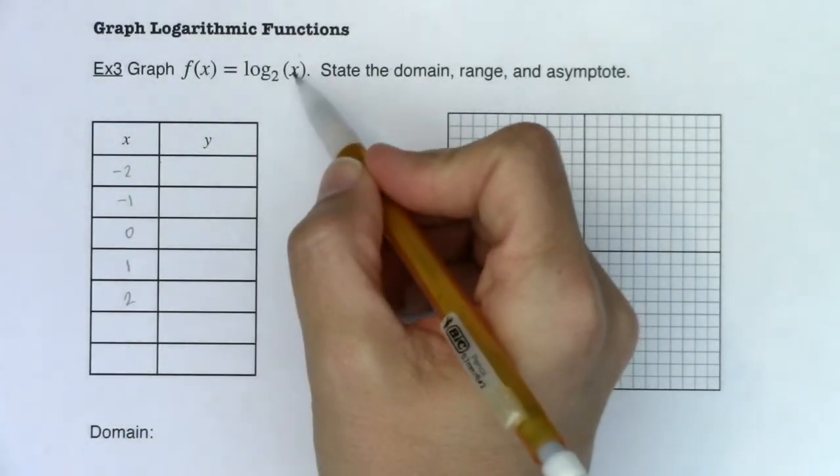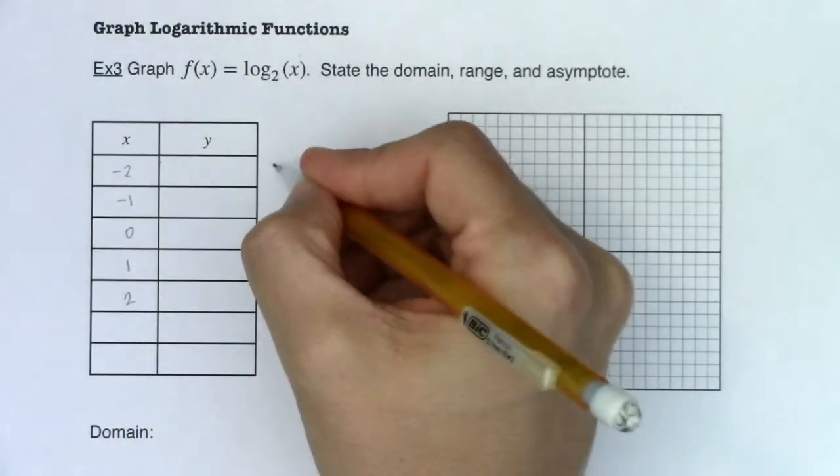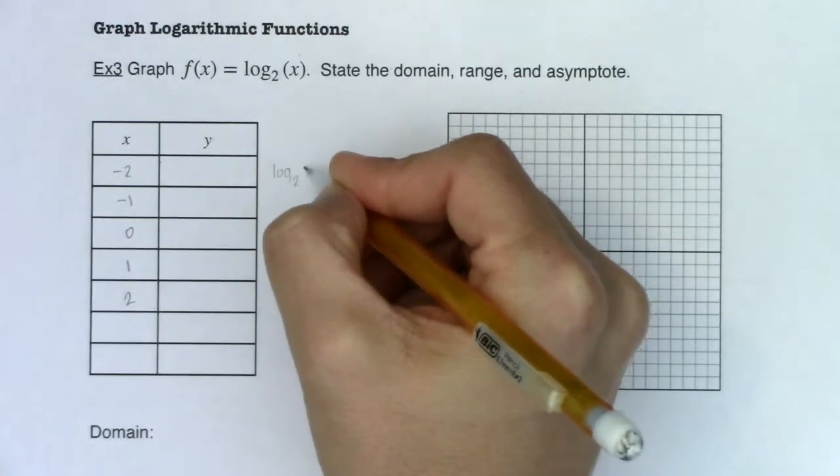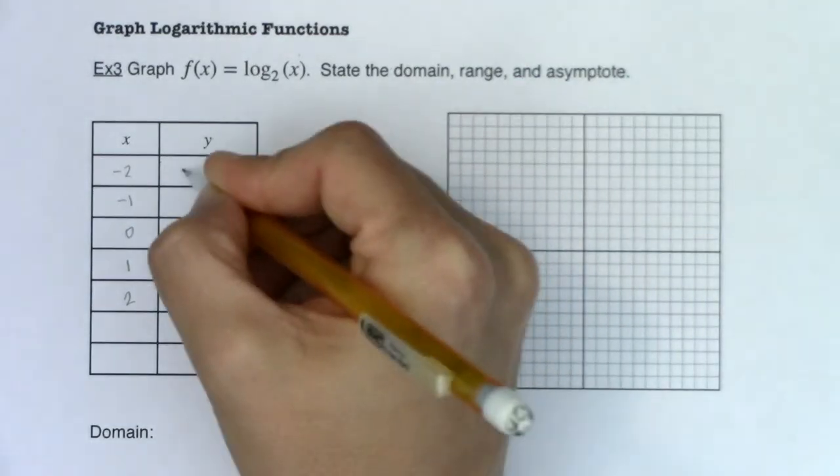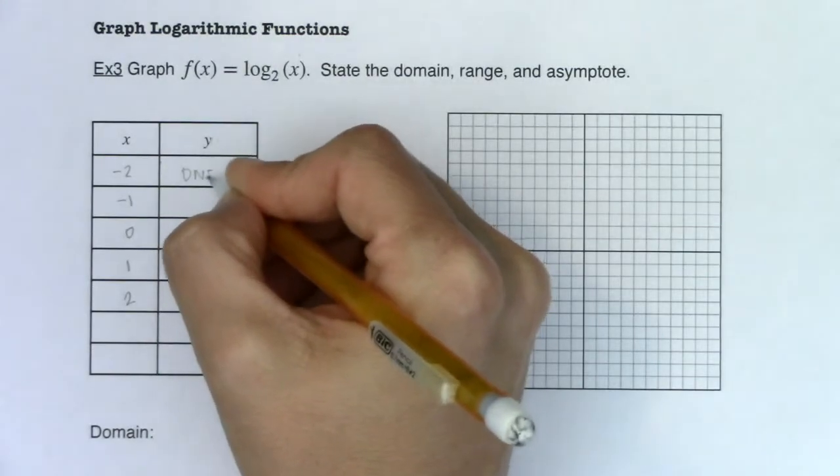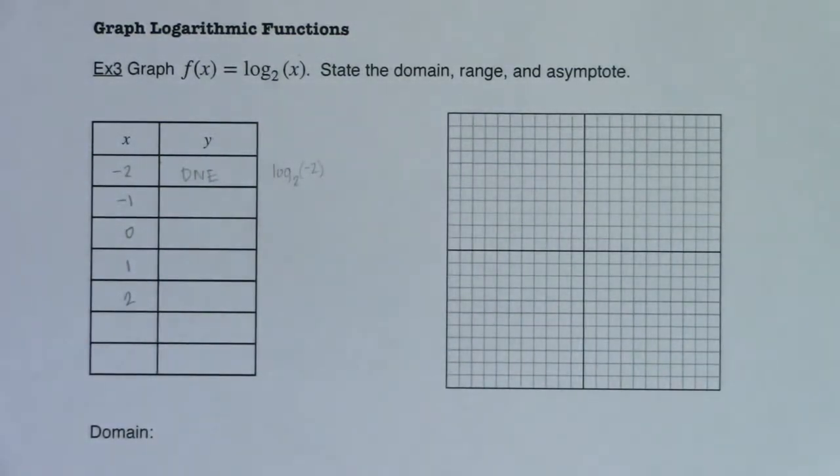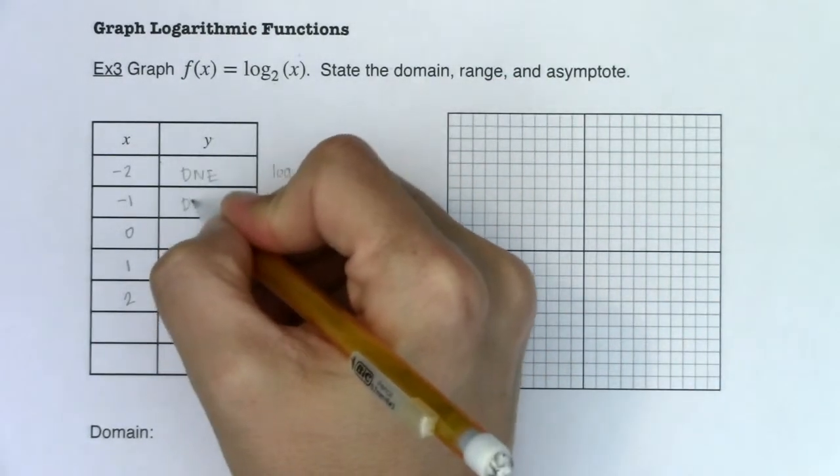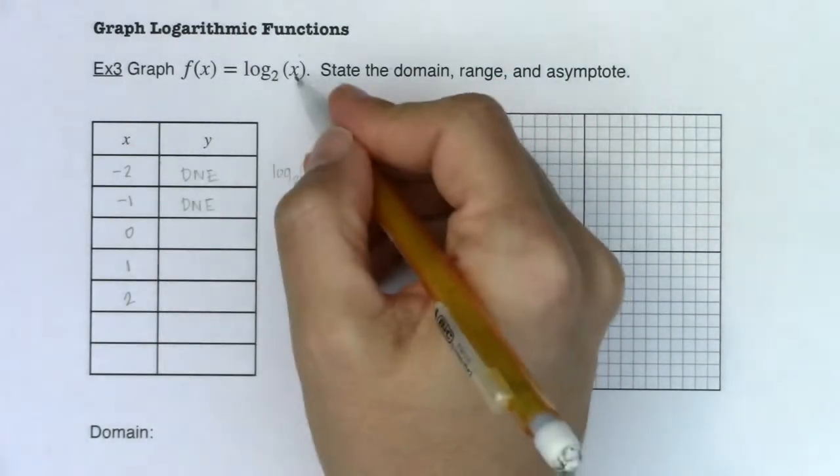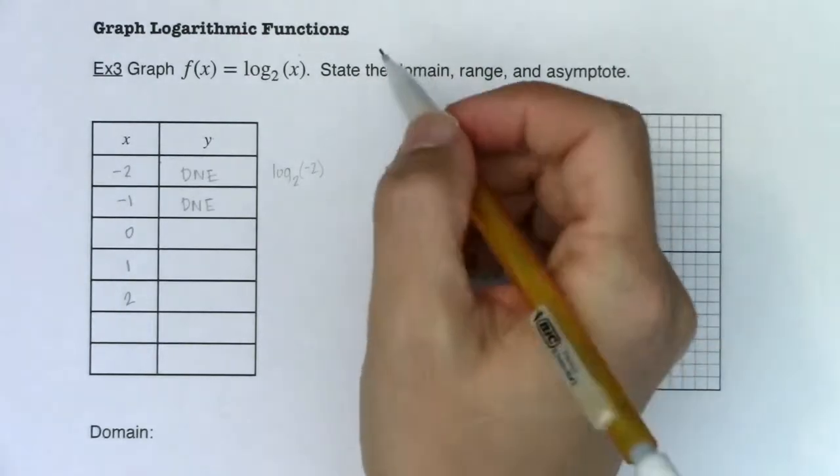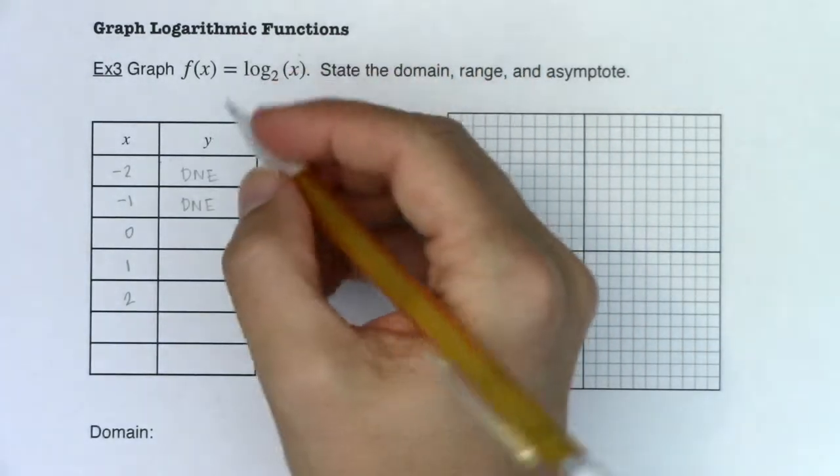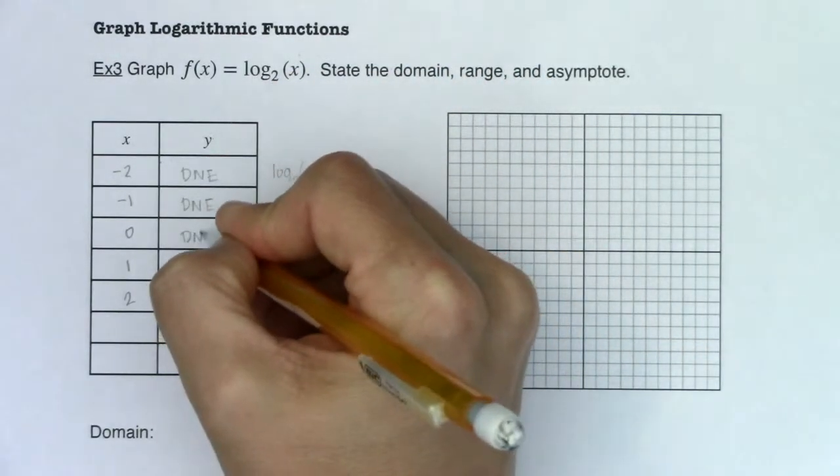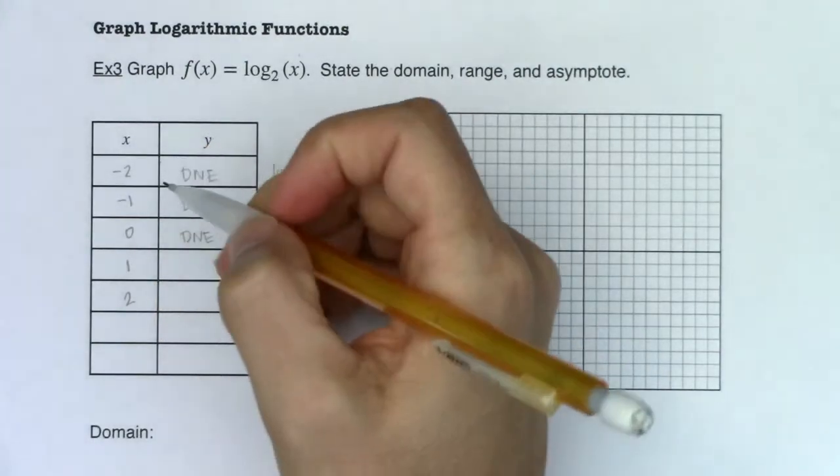If I plug negative two in, I would have log base 2 of negative two and I'm not allowed to take the logarithm of a negative number. So that does not exist. If I try to plug negative one in, I have the same problem. I can't plug a negative number in as my argument. My argument must be strictly positive. So by that same rationale, I can't plug zero in.